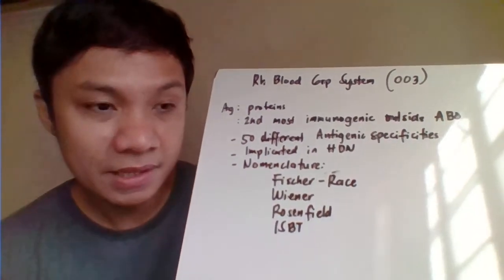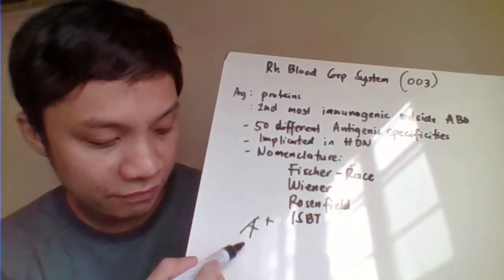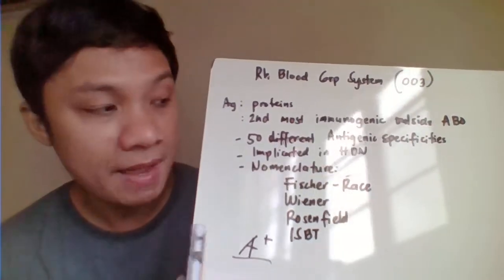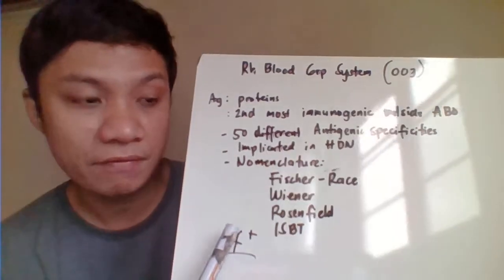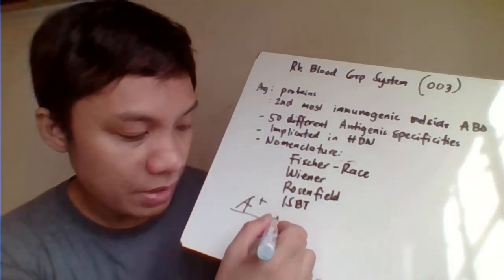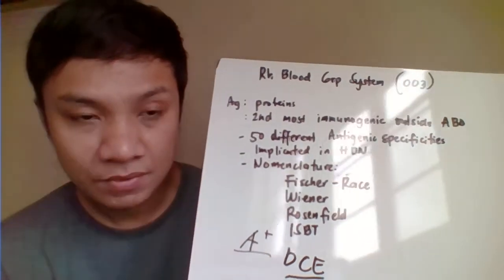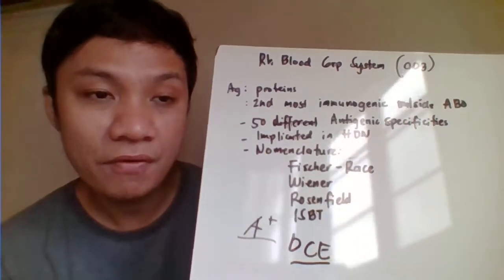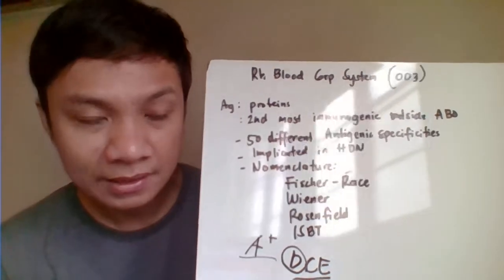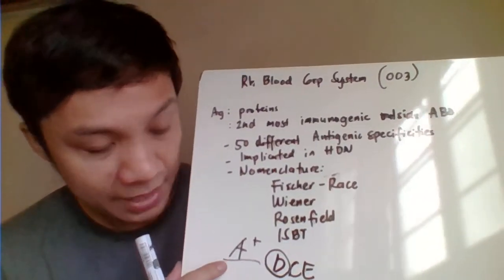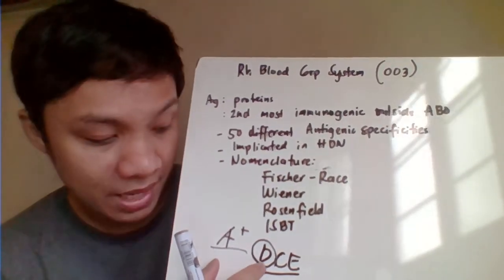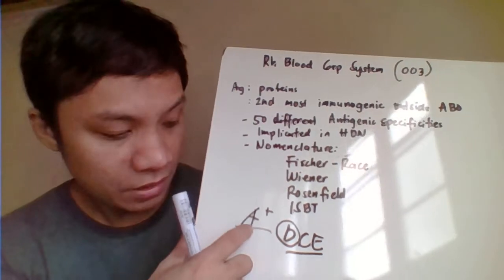RH pertains to the positive-negative designation. Like, for example, in the usual blood type, 'A positive' — the 'A' represents the ABO blood group system, and the positive or negative represents the RH blood group system. This pertains to the RH antigens. There are three RH antigens: D, C, and E. In routine testing for RH blood group, we are just testing for the D antigen. That's why it's called RH-D. So if you are A positive, meaning you are D positive.